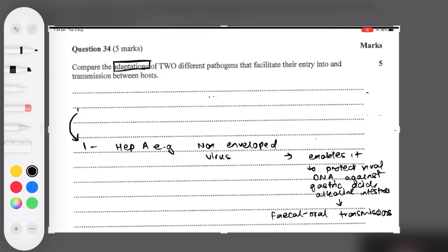So capsid, protein capsid, protects the DNA. Tough protein capsid. Very good. What else do we have?